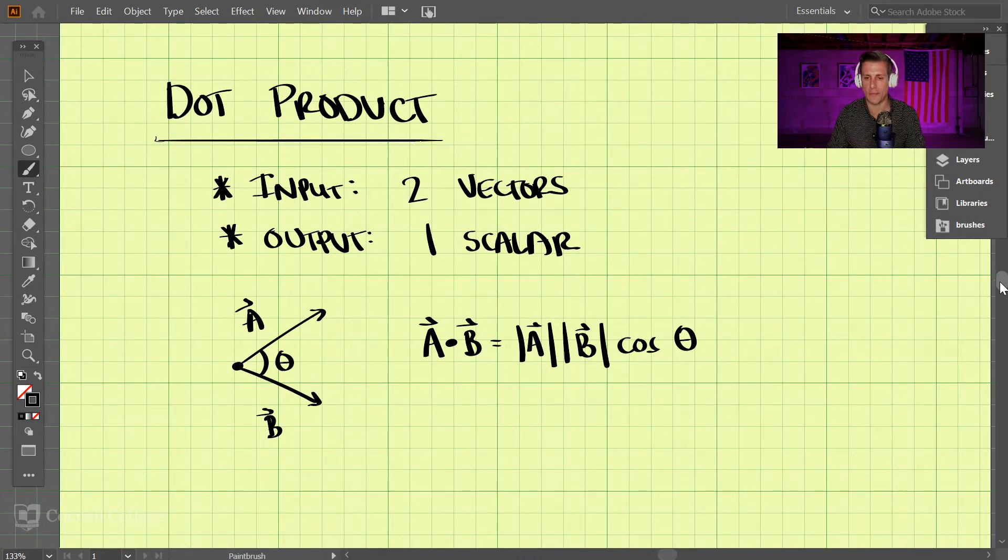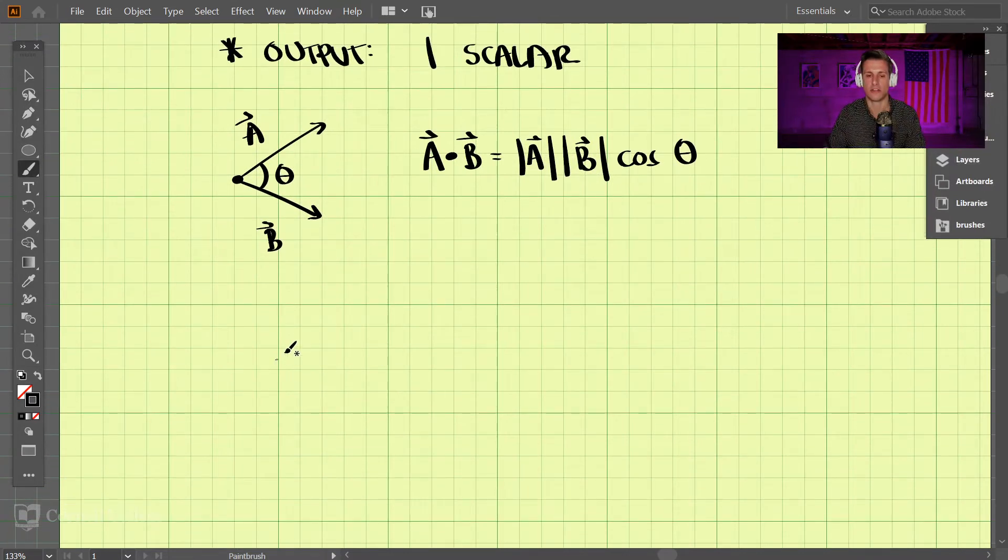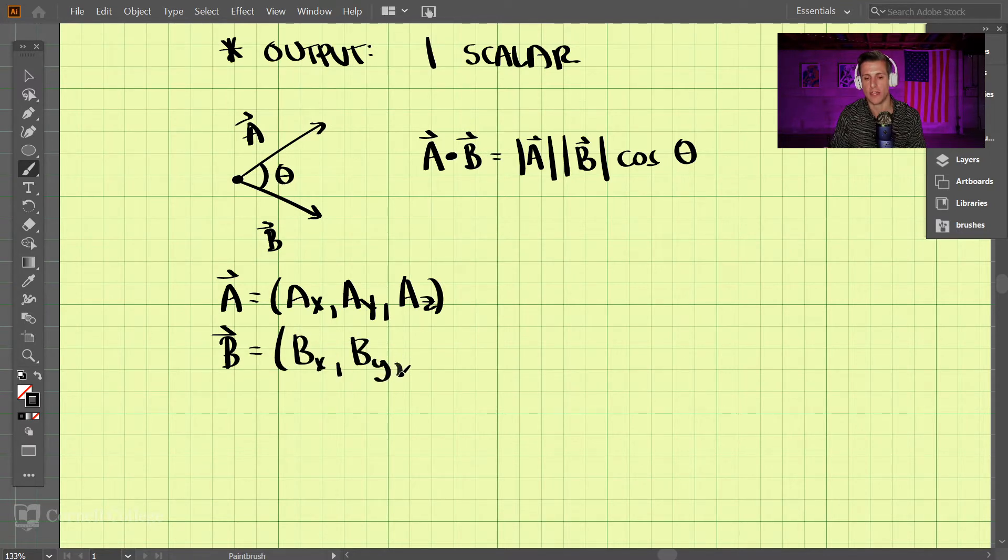It's probably more common that we get the dot product in terms of Cartesian coordinates. So we're given two vectors: A has the components Ax, Ay, and Az, and vector B has components Bx, By, and Bz.